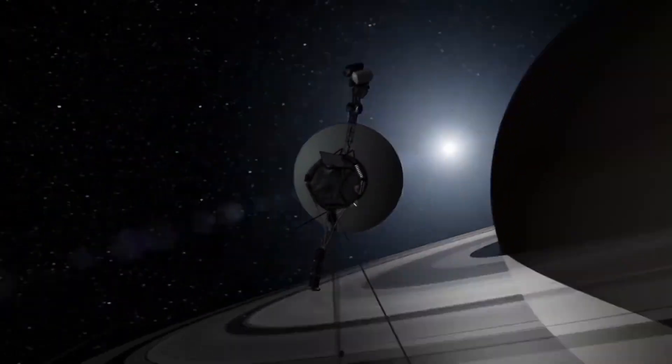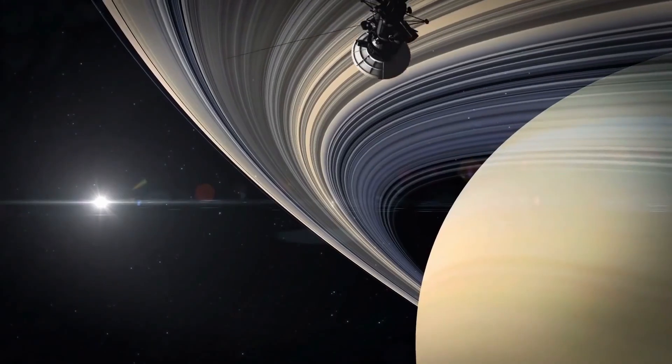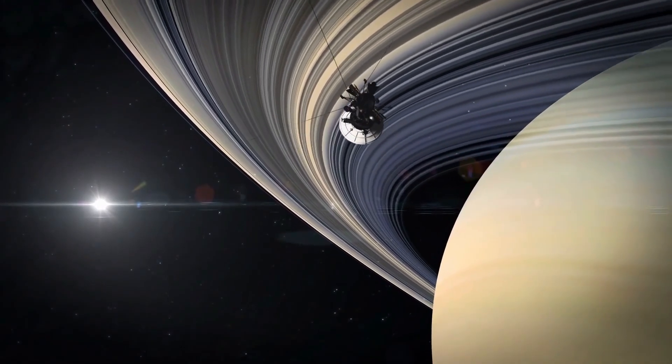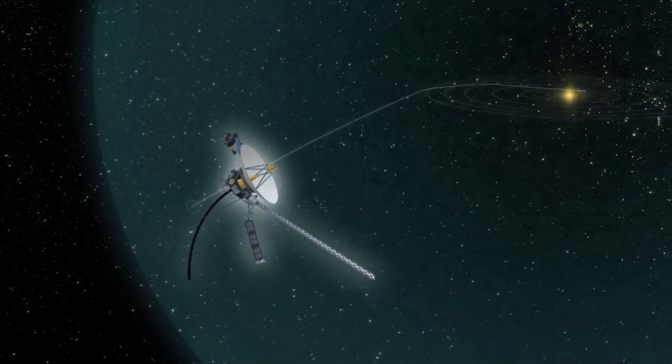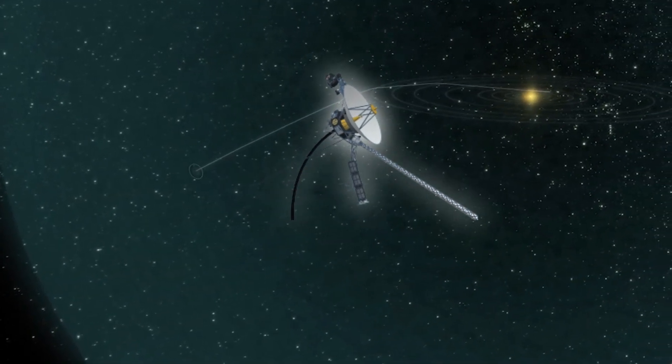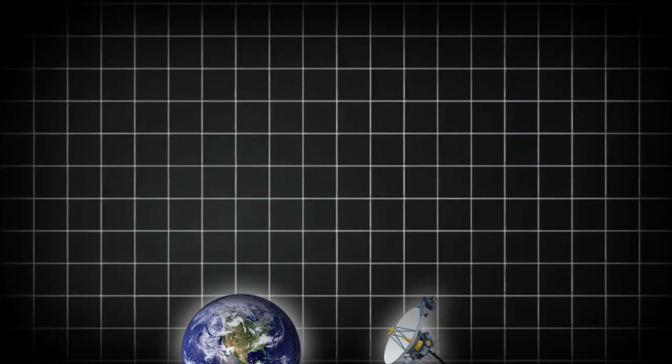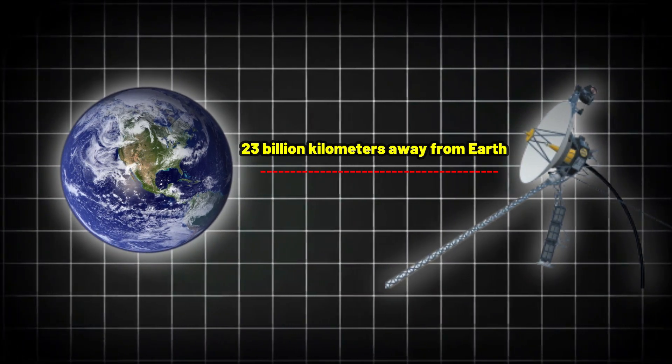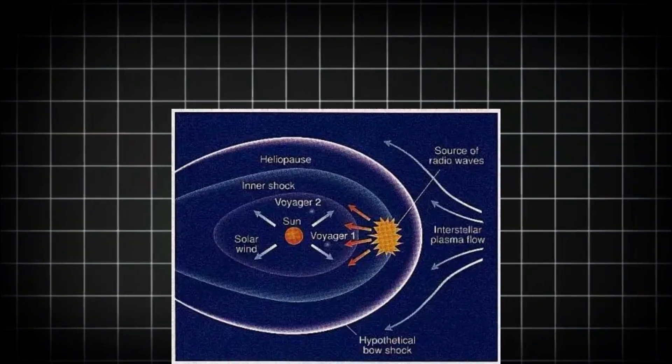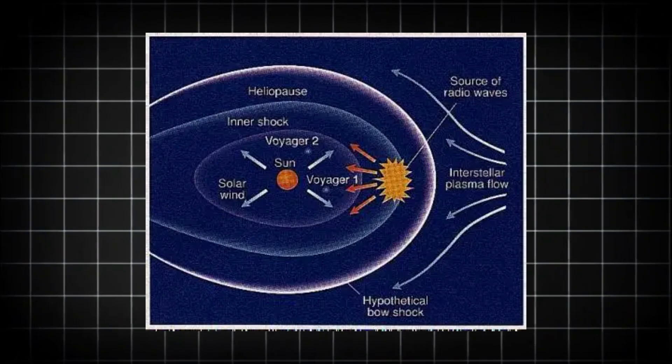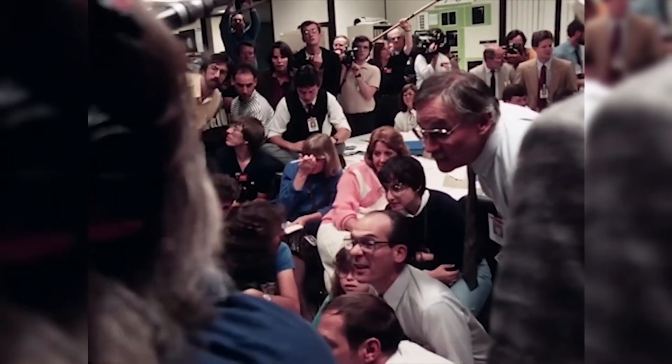For decades, the Voyager missions have been humanity's eyes on the farthest reaches of space. Voyager 1, now more than 23 billion kilometers away from Earth, passed the heliopause, the point where the sun's influence ends, back in 2012, entering the vast expanse of interstellar space.